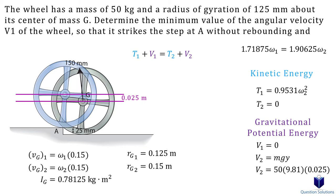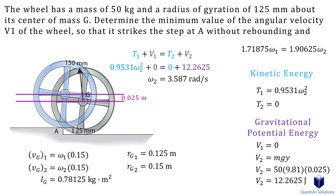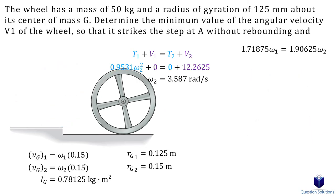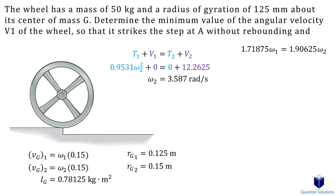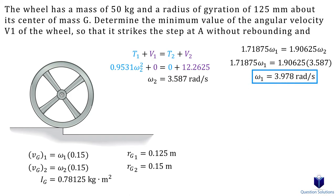Because the displacement is above the datum, it's positive. The mass is 50 kg and acceleration due to gravity is 9.81 m/s². Now that we have all the pieces, let's plug them into our conservation of energy equation and solve for the angular velocity. This gives us the angular velocity right as the wheel is about to go up the step. We then plug this value back into our first equation. The wheel needs to strike the step with an angular velocity of 3.987 rad/s to roll over without slipping.